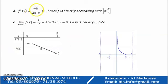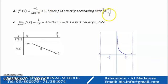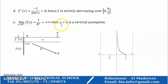f′(x) equals minus 1 over sin²(x), which is strictly less than 0, so f is strictly decreasing over (0, π/2). The limit of f(x) as x tends to 0⁺ equals 1 over 0⁺, which is plus infinity; therefore x = 0 is a vertical asymptote.